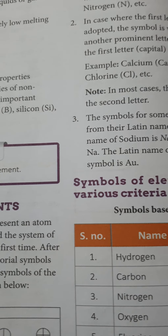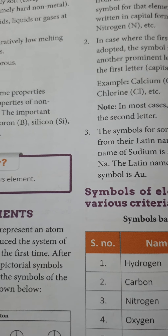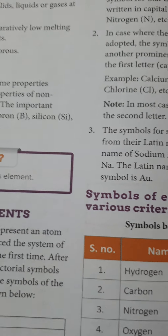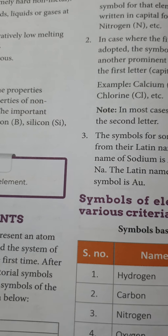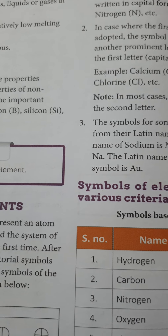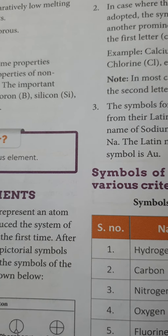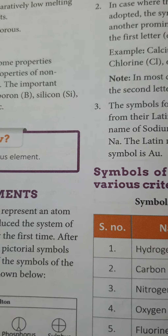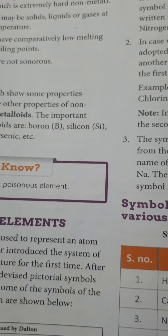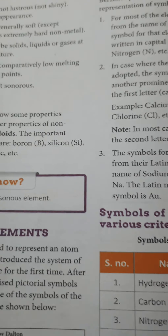When sulfur dioxide (SO2) reacts with water (H2O), it forms sulfurous acid (H2SO3) or sulfuric acid (H2SO4). So the reaction is: SO2 + H2O → H2SO3. These are some of the example reactions with oxygen shown in the notes.